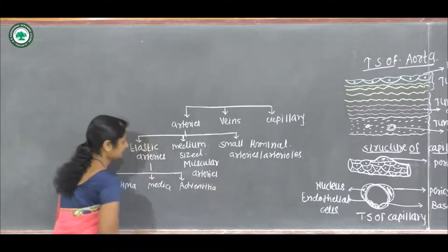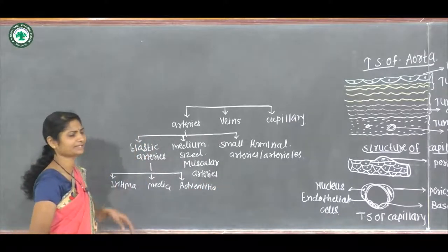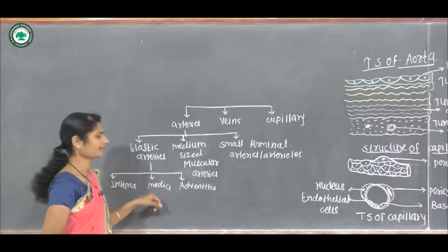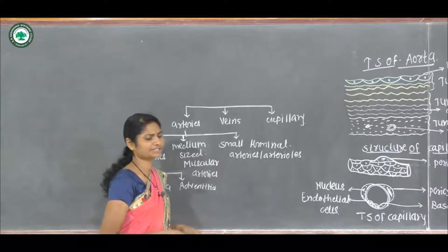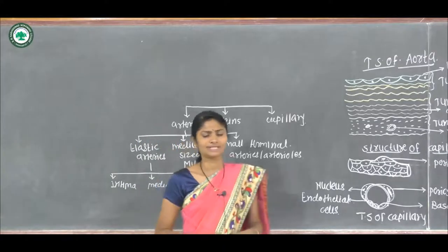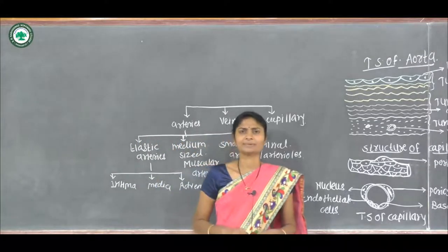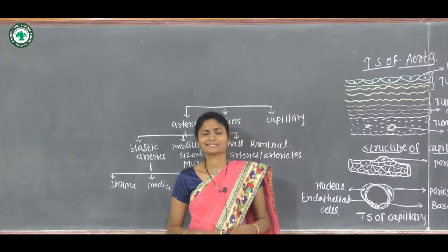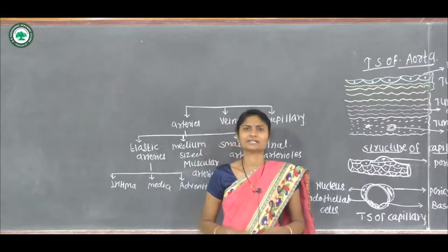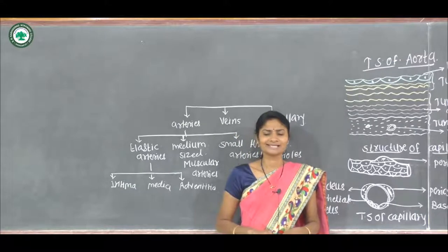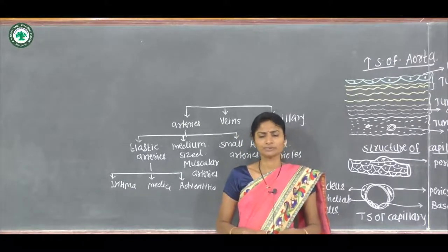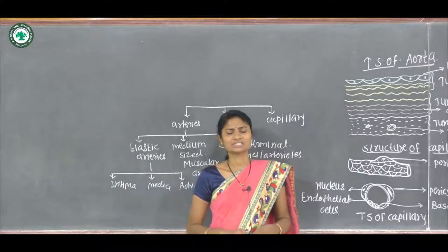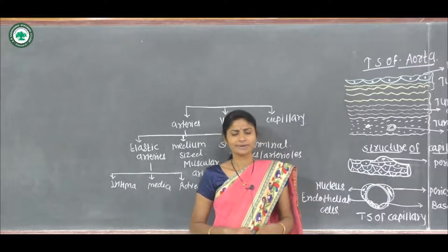The tunica intima layer is made up of a single layer of flattened endothelial cells together with a supporting layer of elastic and collagen fibers.